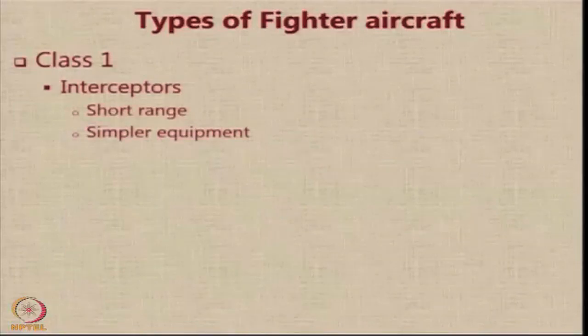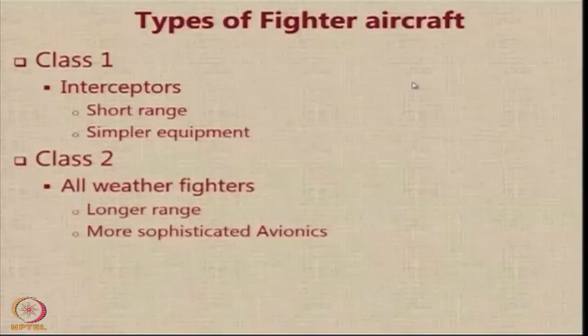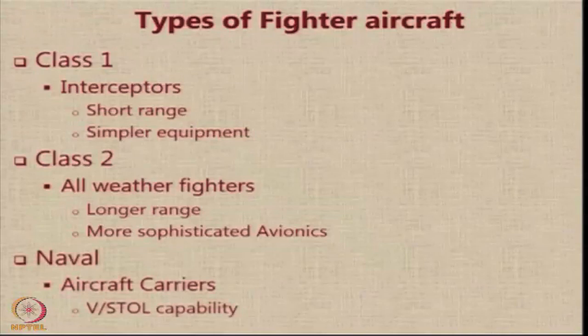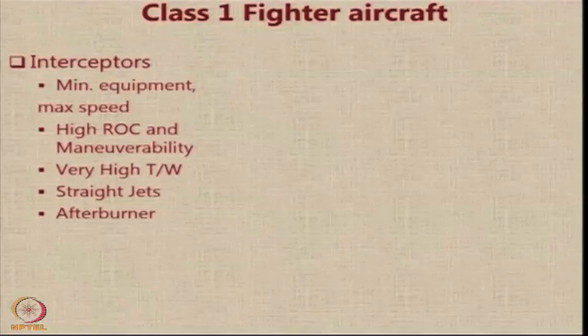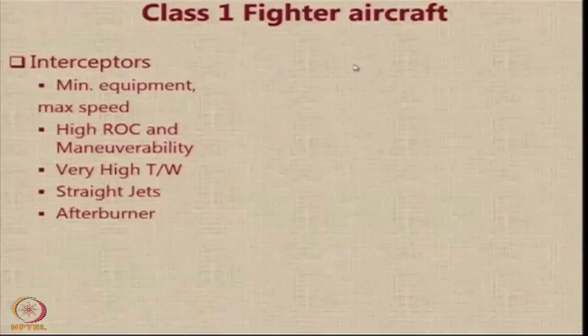Class 1 fighters are interceptors — short range and simpler equipment. Class 2 fighters are all-weather fighters, typically having larger range and more sophisticated avionics. Naval aircraft are used on aircraft carriers and need vertical or at least short takeoff and landing capability. For Class 1 interceptors, high rate of climb and maneuverability are key requirements. From the moment you are given the go-ahead, within the least possible time you should be able to climb to the altitude where the enemy aircraft is operating, intercept it, and shoot it down.